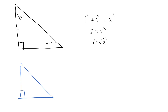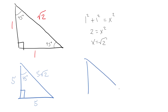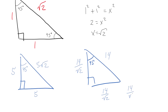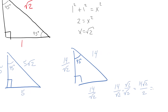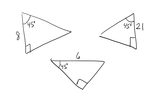The 45-45-90 ratio is 1:1:√2. If both legs are 5, the hypotenuse is 5√2. If the hypotenuse is 14 and it's a 45-45-90 triangle, each leg is 14/√2 — you can rationalize to get 7√2. Leaving it as 14/√2 is sometimes clearer because it's obvious where the number comes from.